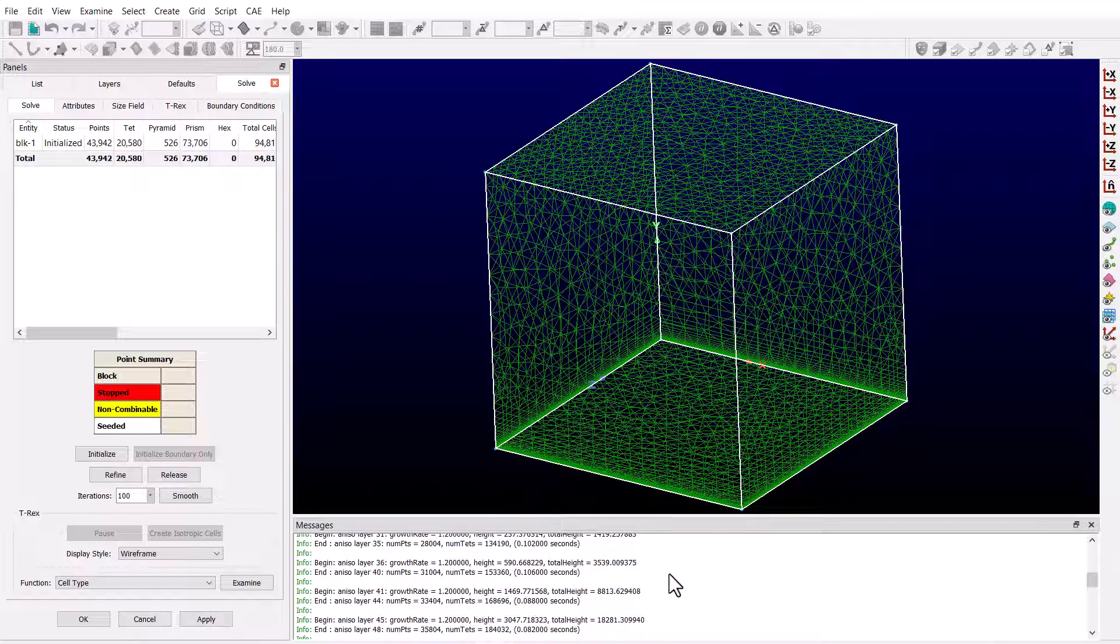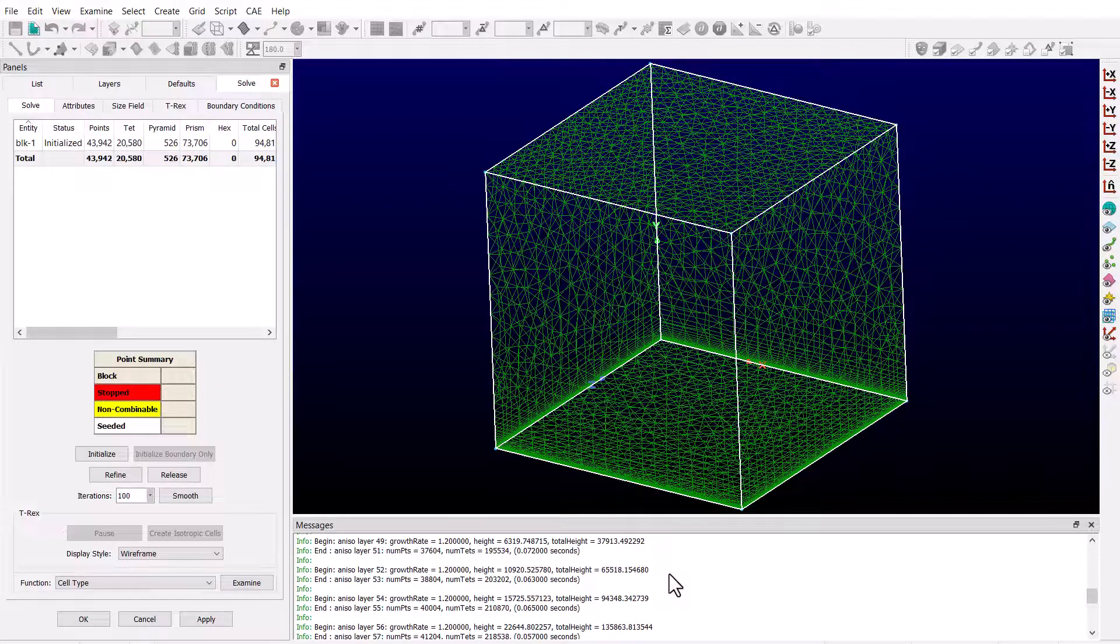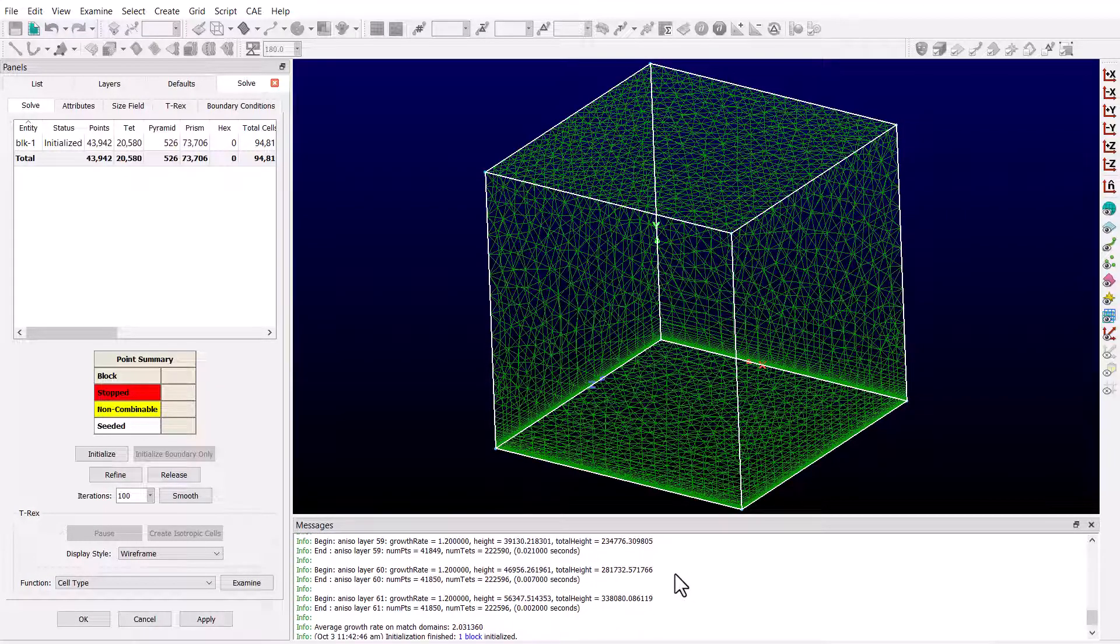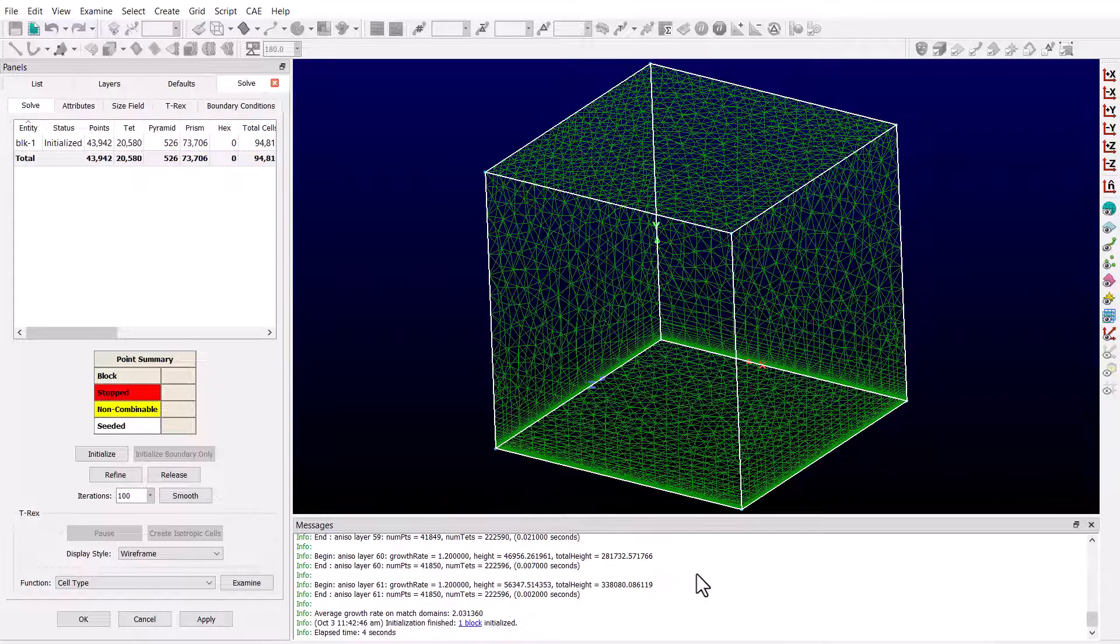And then as we get closer and closer to reaching isotropy, the algorithm intelligently reduces the number of layer subdivisions, and eventually it marches one layer at a time for the last few layers before stopping the anisotropic extrusion.